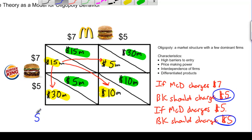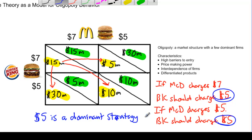We can say that five dollars is a dominant strategy. A dominant strategy exists if an oligopolistic firm should always do the same thing regardless of what its competitor does. In the case of Burger King, it should always charge five dollars. Burger King is better off charging five dollars whether McDonald's is charging seven dollars or five dollars — there is always an incentive for Burger King to charge five dollars based on its competitor's behavior.